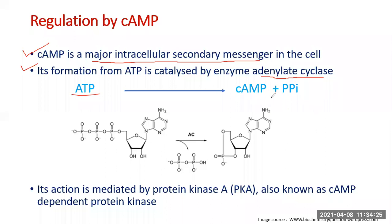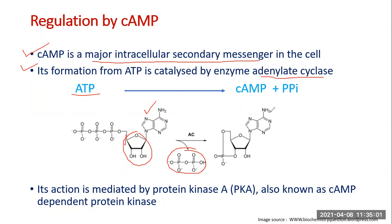In the presence of adenylate cyclase, ATP gets converted into cyclic AMP. ATP has a ribose sugar, adenine, and three phosphates: alpha, beta, and gamma phosphate — adenosine triphosphate. These three phosphates are attached to carbon number five of the ribose. When the pyrophosphate group is removed, a cyclic 3',5'-monophosphate is formed — also called cyclic AMP.